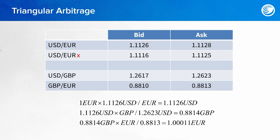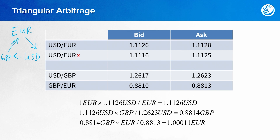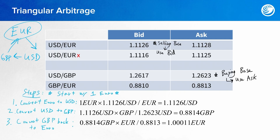So how could we do a triangular arbitrage with this data? We're going to start with euro, then convert euro into USD, then convert the USD into the British pound, and then convert the British pound back to euro. By the time we get all the way back to euro, we should have more euros than what we started with originally. We'll go through a series of three steps, starting with one single euro.